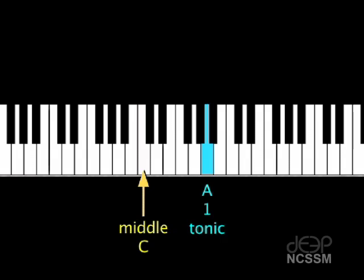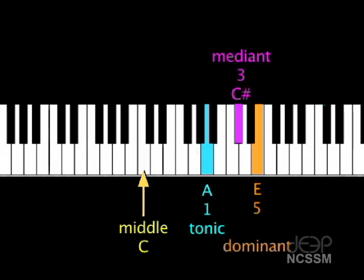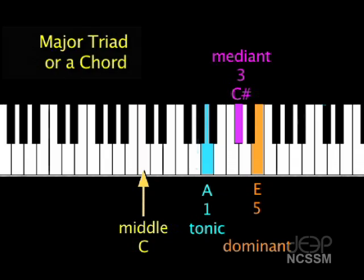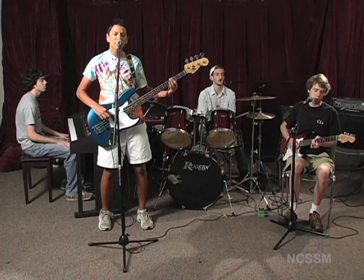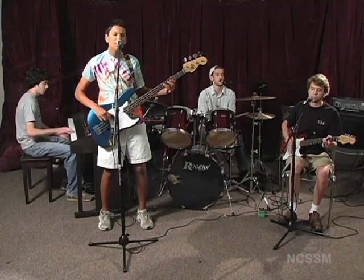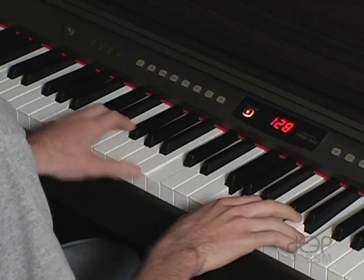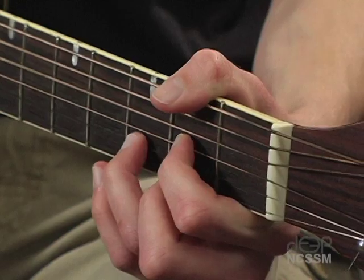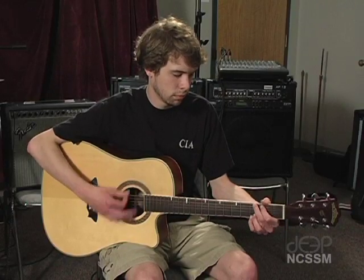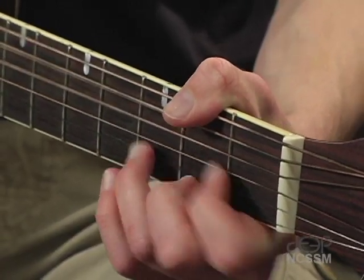Lastly, the tonic, mediant, and dominant — or the first, third, and fifth notes of the scale — all work together to form a major triad, or a chord. Again, we hear major chords every day in music. Now, let's take a look at frequencies and harmonics, and how they relate to major chords.